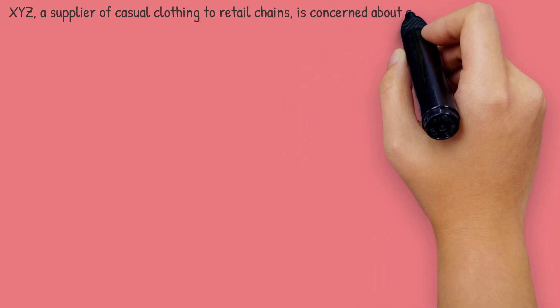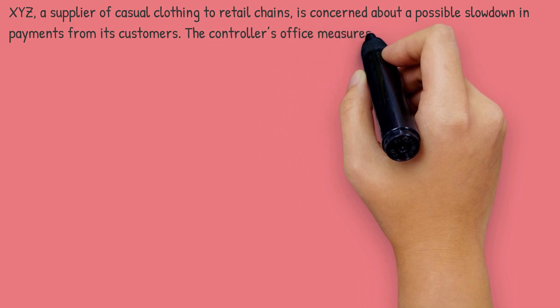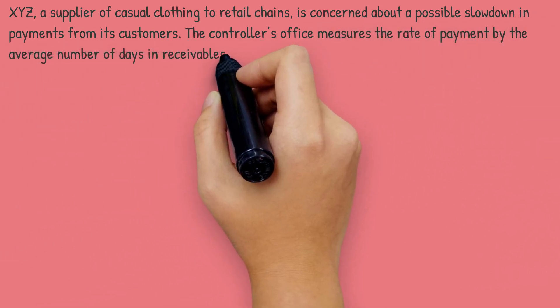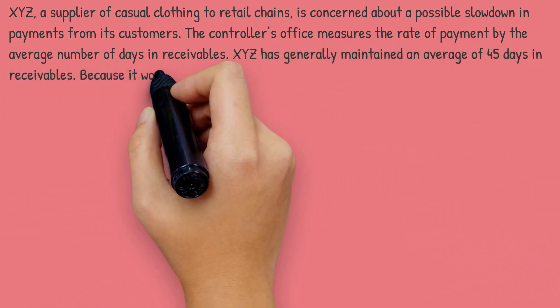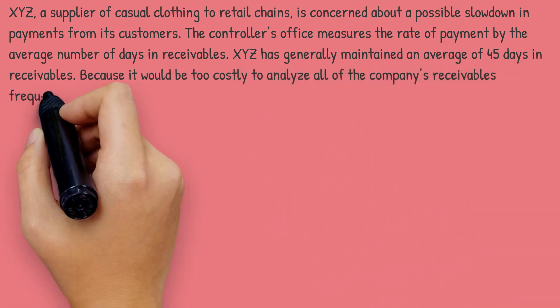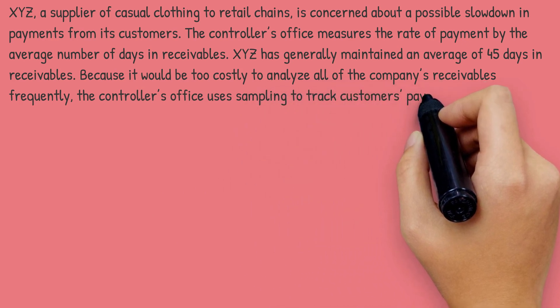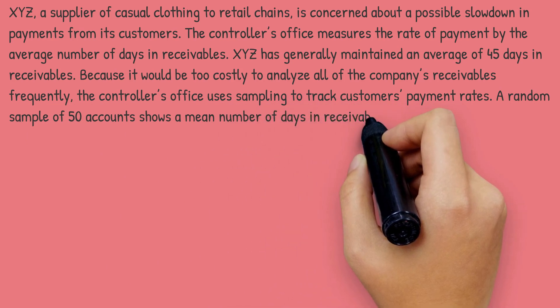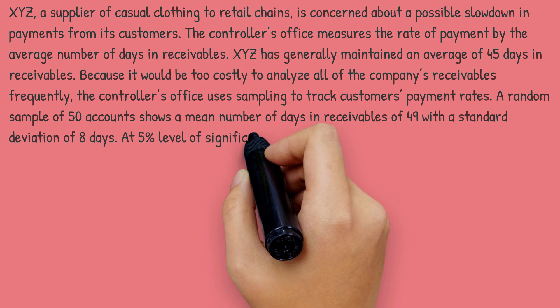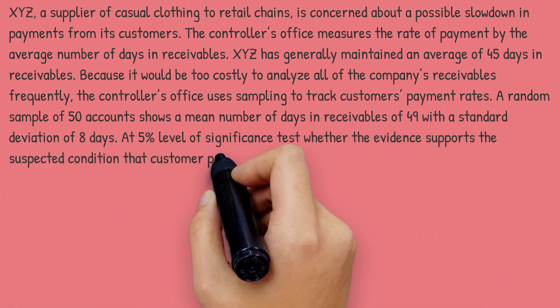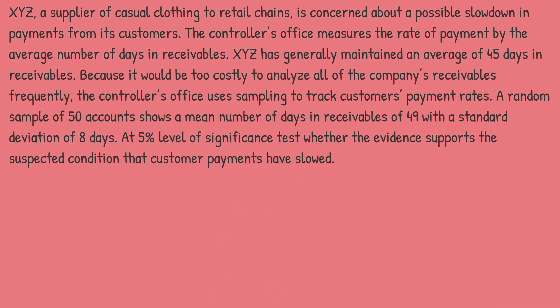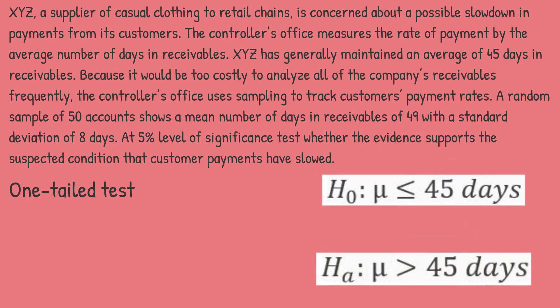Let's look at another example. XYZ, a supplier of clothing to retail chains, is concerned about a possible slowdown in payments from its customers. The controller's office measures payment rate by the average number of days in receivables, and XYZ has generally maintained an average of 45 days. A random sample of 50 accounts shows a mean of 49 days in receivables with a standard deviation of 8 days. At the 5% level of significance, we test whether the evidence supports the condition that customer payment has slowed. The null hypothesis is μ ≤ 45 versus the alternative hypothesis μ > 45.